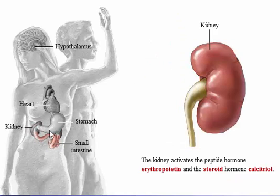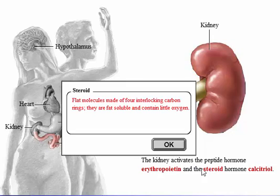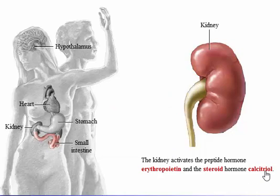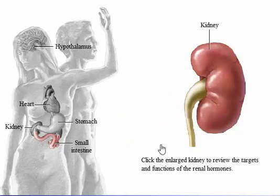The kidney produces the peptide hormone erythropoietin and the steroid hormone calcitriol. Click the enlarged kidney to review the targets and functions of the renal hormones.